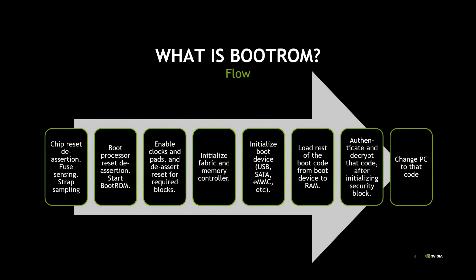I'm showing this in a linear fashion from left to right, but it is really not the case — this is just a high-level picture. We start with chip de-assertion, sense the fuses, sample the straps to record configuration parameters, then de-assert the reset of the boot processor and boot ROM execution starts. Boot ROM then initializes various parts of the chip: enabling clocks and pads, enabling the fabric and memory controller, initializing the boot device, loading code from the boot device into RAM, authorizing and decrypting that code, then changing the program counter to that code. These are referred to as boot stages.